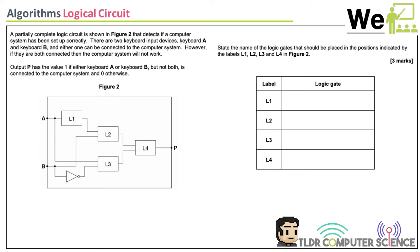We have to read the circuit and link the logic. How many inputs are going into L1? One. If there's only one input coming in, it must be a NOT gate. So L1 is NOT. The other gates — L2, L3, and L4 — must each be either AND or OR.